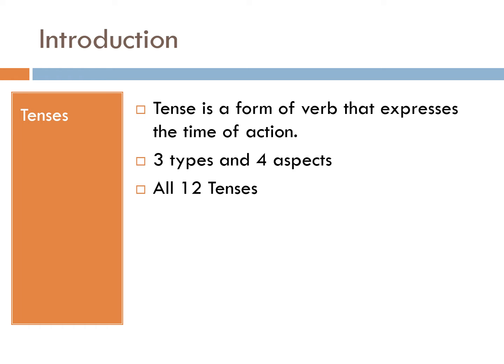Koi bhi action kab hua hai? Is it taking place right now? Has it already taken place? Will it take place in future? There are basically 3 types and 4 aspects of tenses and when we combine these, we get 12 tenses of English grammar. We have discussed this in our previous videos and the links are provided in the description box. Those who want to view those videos can click on those and get access to all 12 tenses of English grammar.